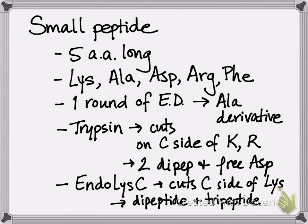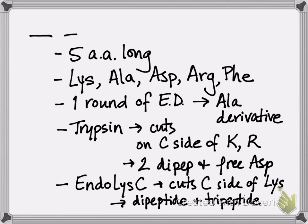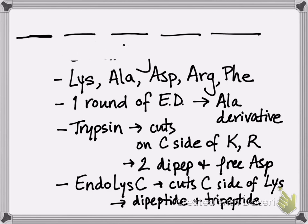Given all of these clues — given all your data — what's the sequence of amino acids in this peptide? We know our peptide is five amino acids long, so I usually draw five little spaces and fill them in as we go through the problem. We've got five different amino acids, so there are no repeats — one of each. We did one round of Edman degradation and got an alanine derivative, which tells us that alanine must be at the N-terminus of our peptide.